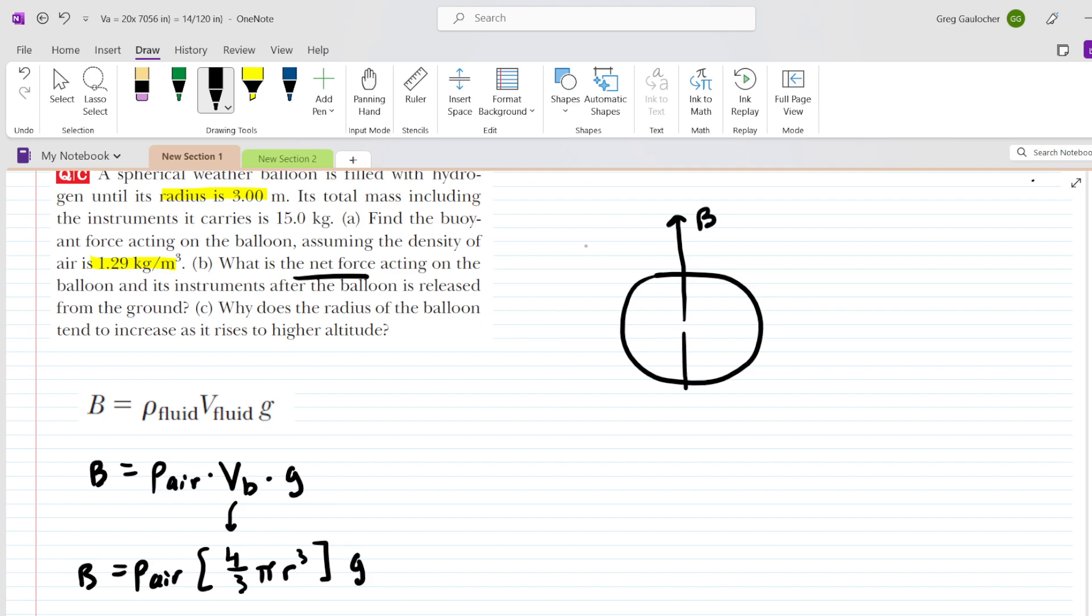We will assign positive for the upward direction, negative for the downward direction, and therefore the net force can be expressed as the sum of those two forces. So we will add B and negative mg. Notice the negative on mg again because it's downward. So really that's just the buoyant force minus mg.